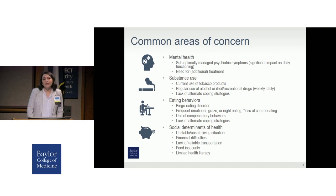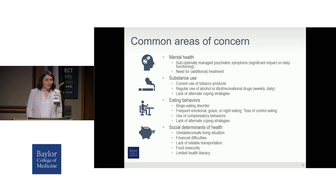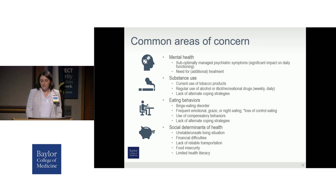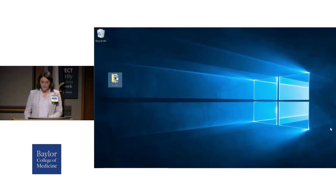In considering whether a patient is an acceptable candidate for surgery, we need to take into consideration social and environmental factors. Are they in a safe and stable living environment? Does the patient have the financial resources necessary to eat three meals a day and purchase vitamins and supplements? Do they have access to reliable transportation to and from their follow-up appointments? In these cases, it's really important that we consider whether it's ethical to provide a patient with surgery if we know they're unable to do what they need to do to be successful and safe after surgery.